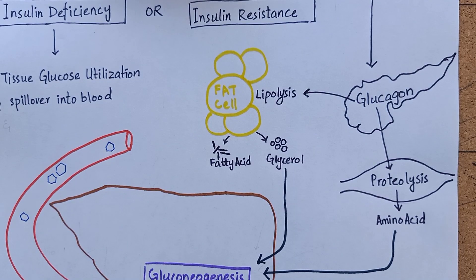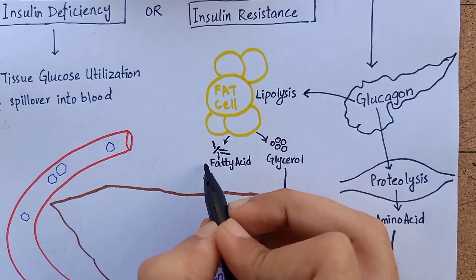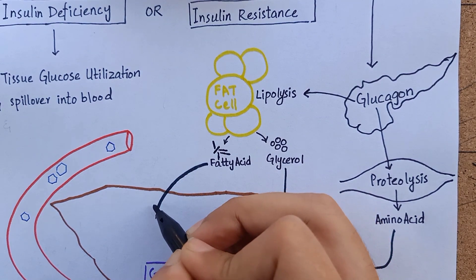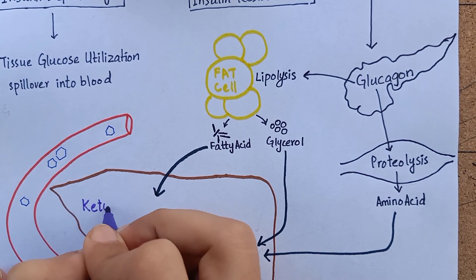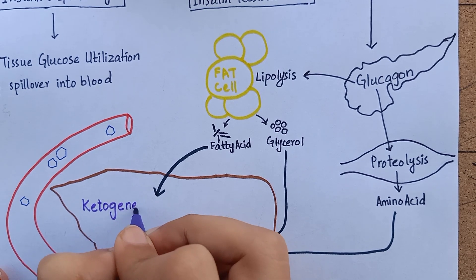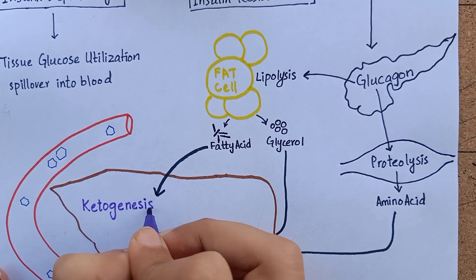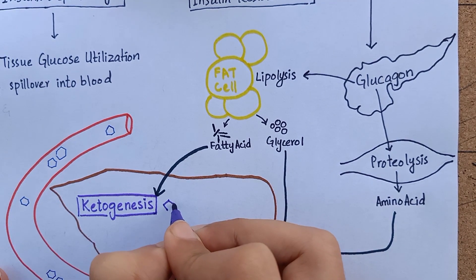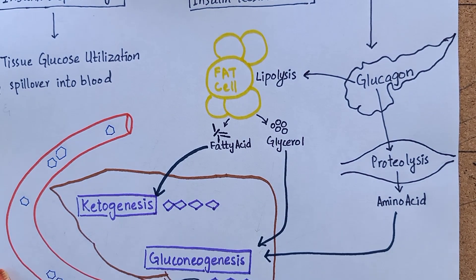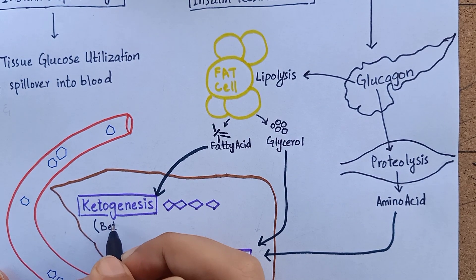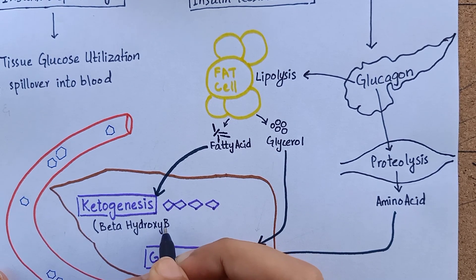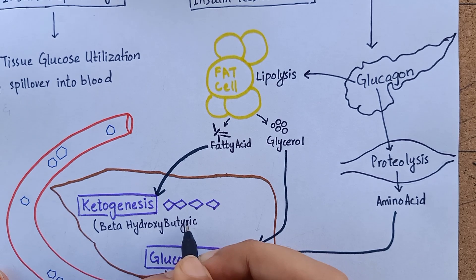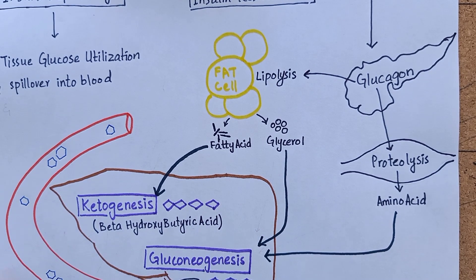Another major effect of insulin deficiency is the activation of the ketogenic machinery. The process of lipolysis initiated by glucagon also produces free fatty acids. When free fatty acids reach the liver, they are esterified and oxidized in hepatic mitochondria, producing ketone bodies — acetoacetate and beta-hydroxybutyric acid. Beta-hydroxybutyric acid serves as an energy source in the absence of insulin-mediated glucose utilization, and it is a protective mechanism in cases of starvation.